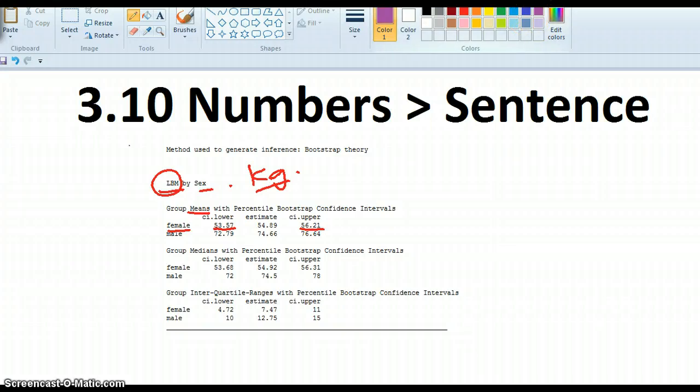It's a fairly safe bet that the male's lean body mass in kilograms in the IAS database of athletes is somewhere between 72.79 kilograms and 76.64 kilograms.